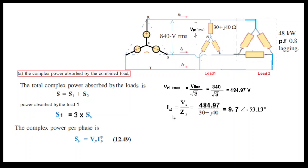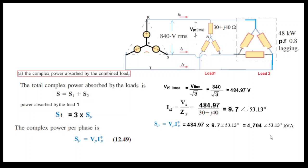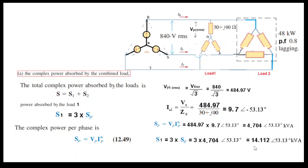Now we have Vp and Ip, so we find the phase power Sp. Substituting the values of V and I — because of the conjugate, we change the sign from minus to plus for the angle. Solving with the calculator in complex mode gives the single-phase complex power. Multiplying by 3 for three-phase gives the total complex power consumed by load one.